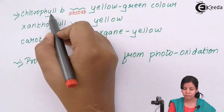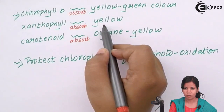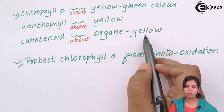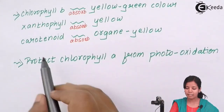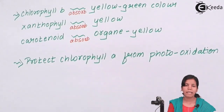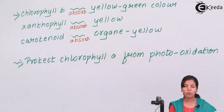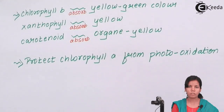Chlorophyll B, an accessory pigment, absorbs in the yellow and green region of the spectrum. Xanthophyll absorbs in the yellow region, and carotenoids absorb in the orange to yellow region, so maximum absorption is by chlorophyll A — the master pigment. Apart from helping in photosynthesis, these accessory pigments also protect chlorophyll A from photo-oxidation. In this part of the chapter we have covered the various pigments of photosynthesis — chlorophyll A, chlorophyll B, carotenoids, and xanthophyll — and how they help each other carry out photosynthesis.